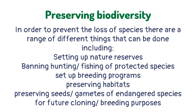In order to prevent the loss of species, there are a range of different things that can be done, including setting up nature reserves, banning hunting or fishing of protected species, setting up breeding programs, preserving habitats, and preserving the seeds of endangered plants and the gametes of endangered species for future cloning or breeding purposes.